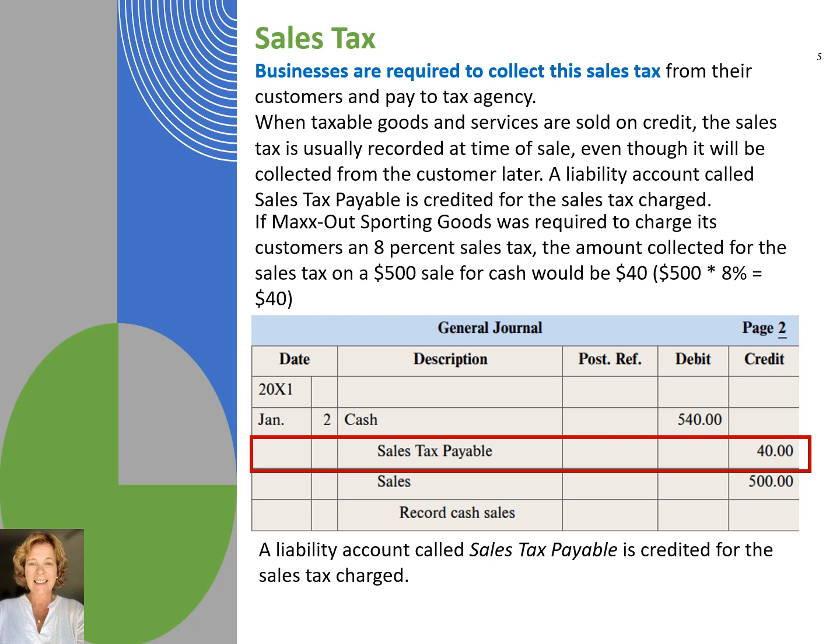Most states and many local governments impose a sales tax on the sale of certain goods and services. Businesses are required to collect this tax from their customers and pay it to the tax agency. There are special rules around what is called sales tax nexus, the requirement of a business to collect sales tax in a state. Some sales are exempt, whereas in other cases the purchaser has a sales tax exempt certificate. In other cases, sales across state lines are only taxable if they exceed a certain dollar amount. In general, when taxable goods and services are sold on cash or credit, the sales tax is recorded at the time of sale, even though it will be collected from the customer later in the case of a credit sale. A liability account called sales tax payable is credited for the sales tax charged.